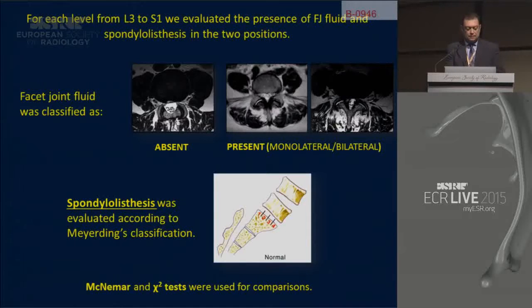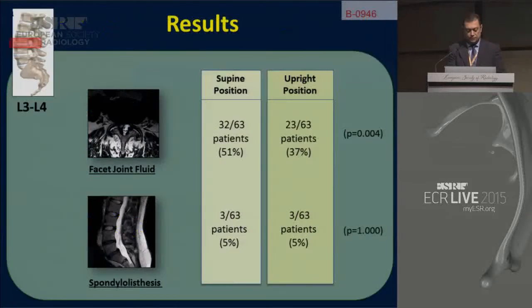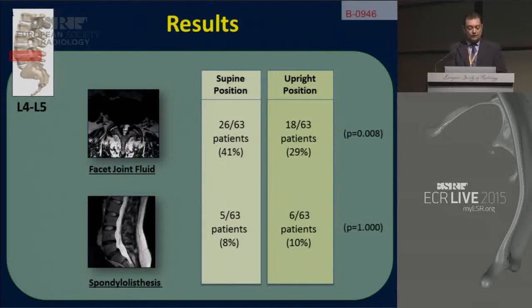We considered findings as absent, present, monolateral, or bilateral. Spondylolisthesis was evaluated according to the Meyerding classification, and we used the McNemar exact test for comparison. Here you can see the results for L3-L4, L4-L5, and L5-S1.